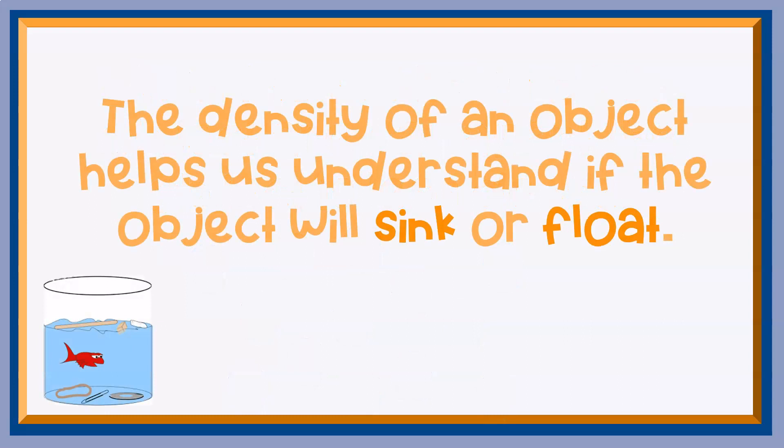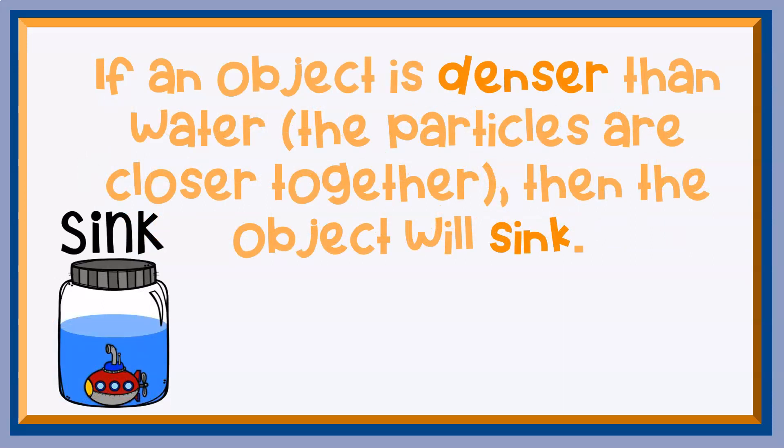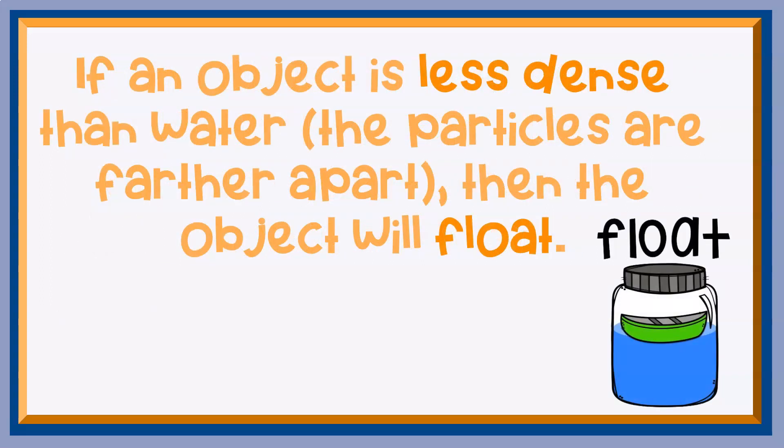The density of an object helps us understand if the object will sink or float. If an object is denser than water, the particles are closer together, then the object will sink. If an object is less dense than water, the particles are farther apart, then the object will float.